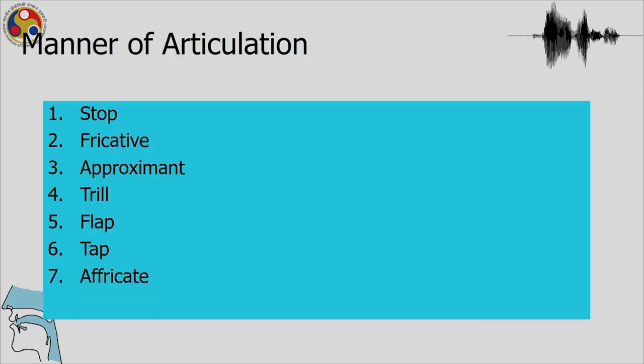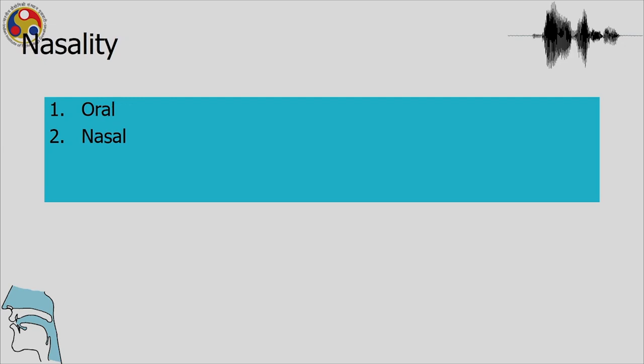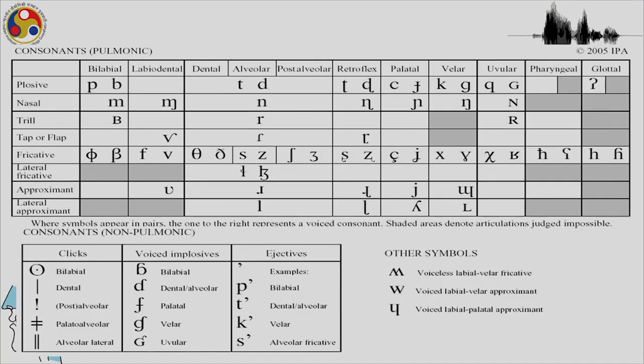Manner of articulation discussed includes stop, fricative, approximant, trill, flap, tap, and affricate. Centrality — whether air is released centrally or laterally — and nasality — whether sounds are oral or nasal — are also important considerations. The IPA symbols for all these sounds have been covered: plosives, nasals, trills, tap/flap, fricatives, lateral fricatives, approximants, lateral approximants, and for airstream-based sounds — clicks, voiced implosives, and ejectives.